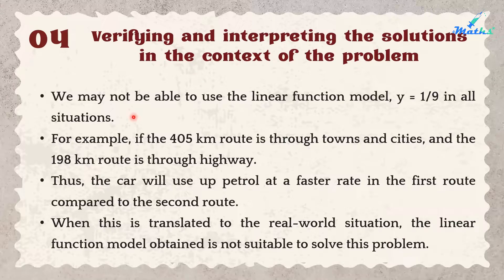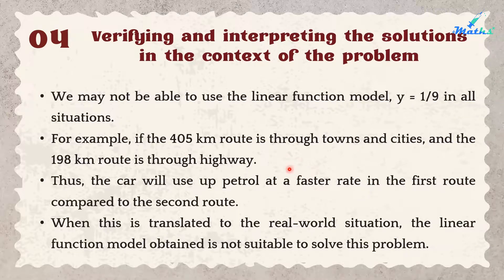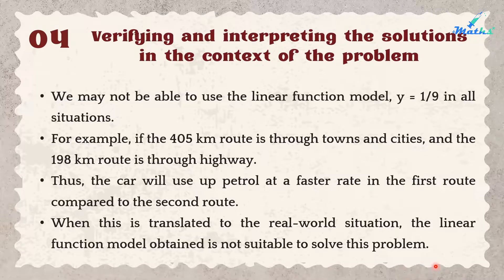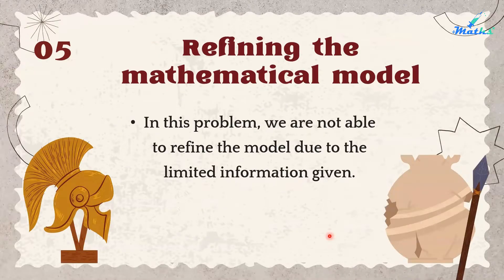Step 4 — Verifying and interpreting the solution: We may not be able to use the linear function model y = (1/9)x in all situations. For example, if the 405 km road goes through towns and cities, and the 198 km road is through a highway, the car will use petrol at a faster rate on the first route. In that case, the linear model obtained is not suitable. Step 5 — Refining the model: In this problem we are not able to refine the model due to limited information given.